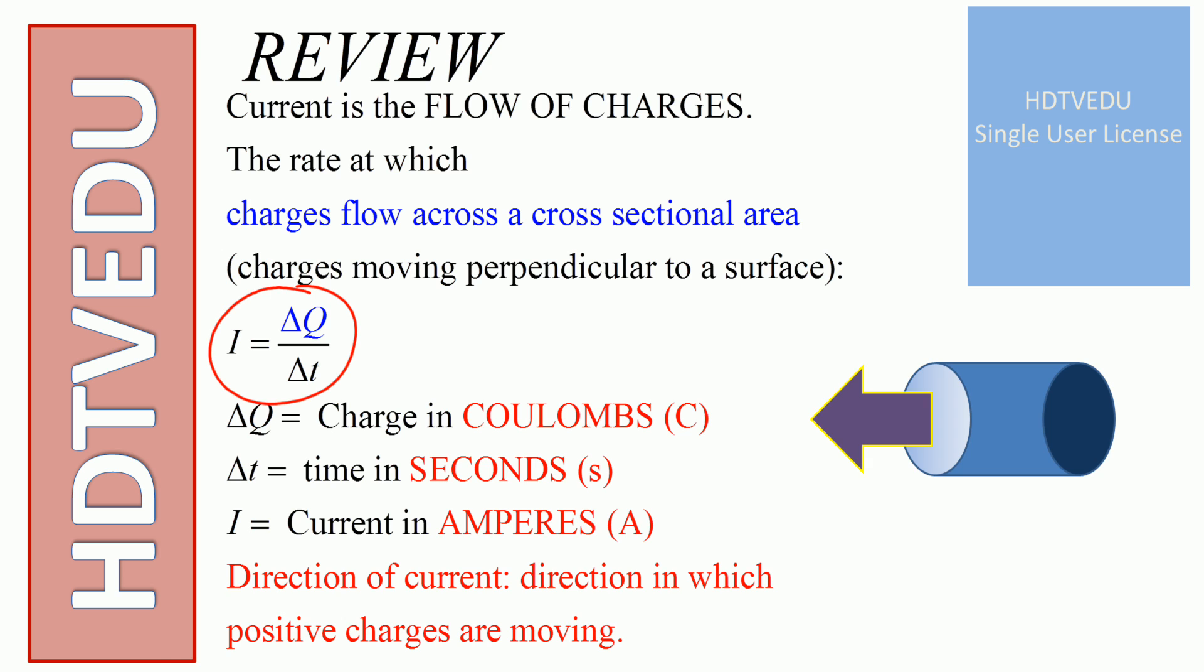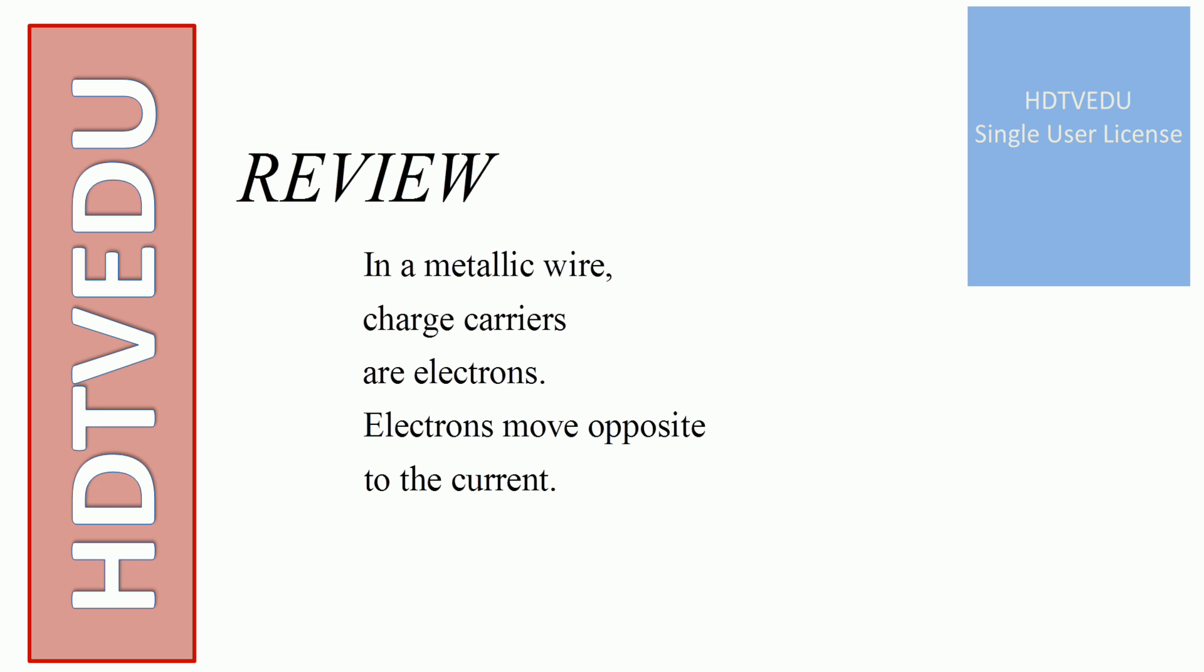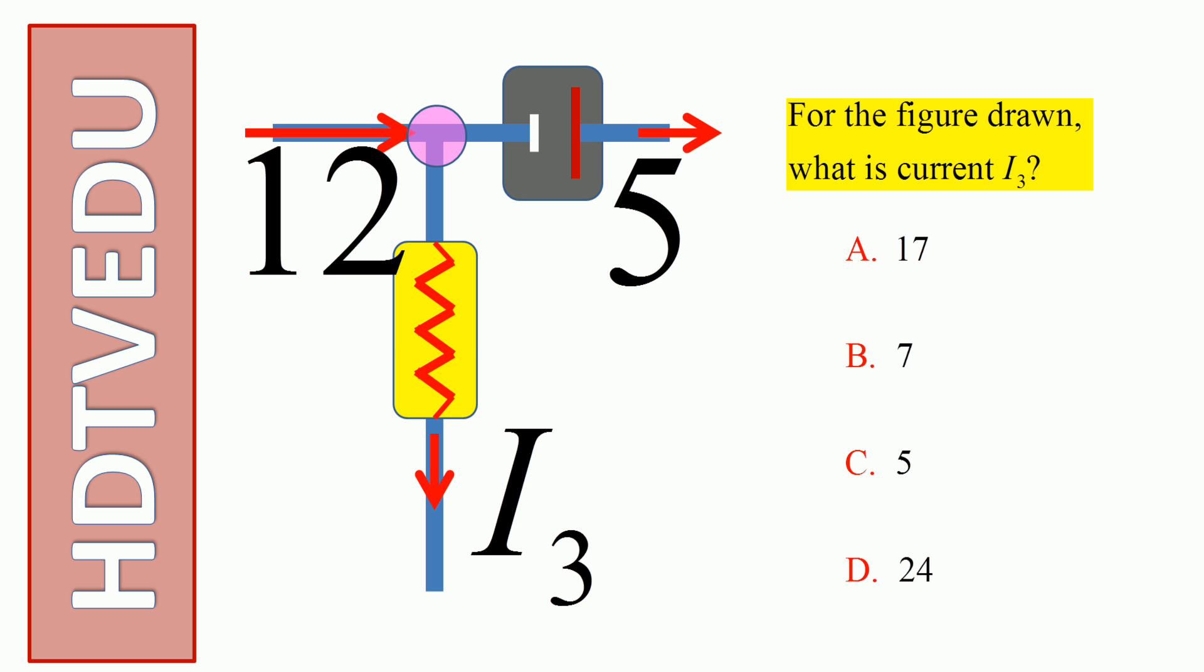What is I? Current in amperes. Direction of current is the direction in which positive charges are moving. In a metallic wire, charge carriers are electrons. Electrons move opposite to the current. All right, so here is 12 entering, 5...